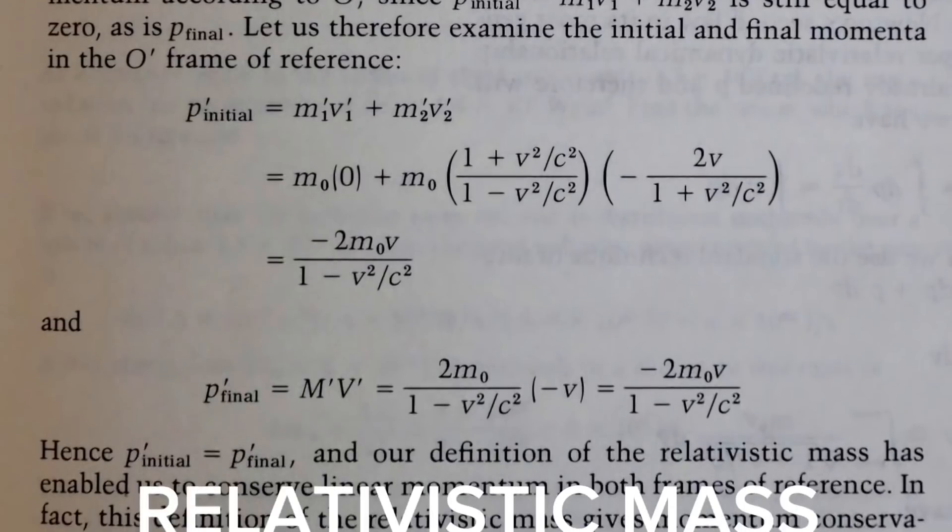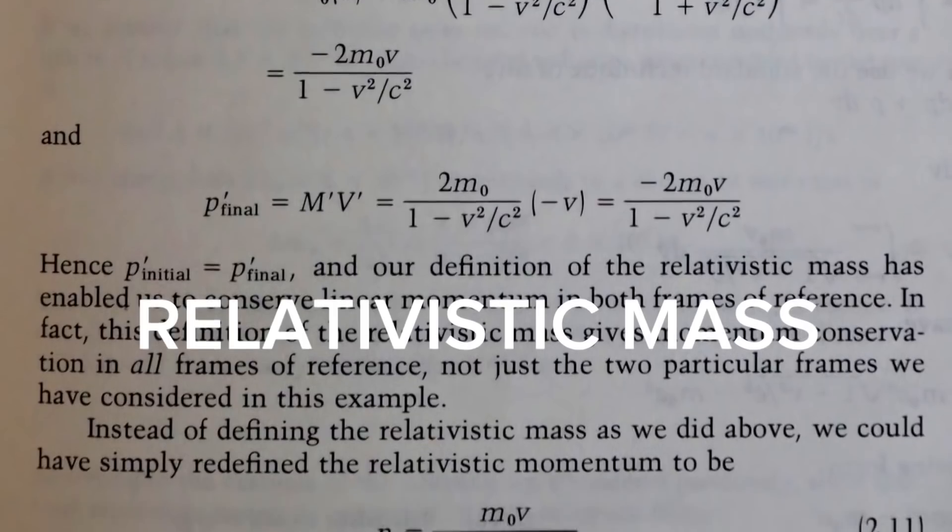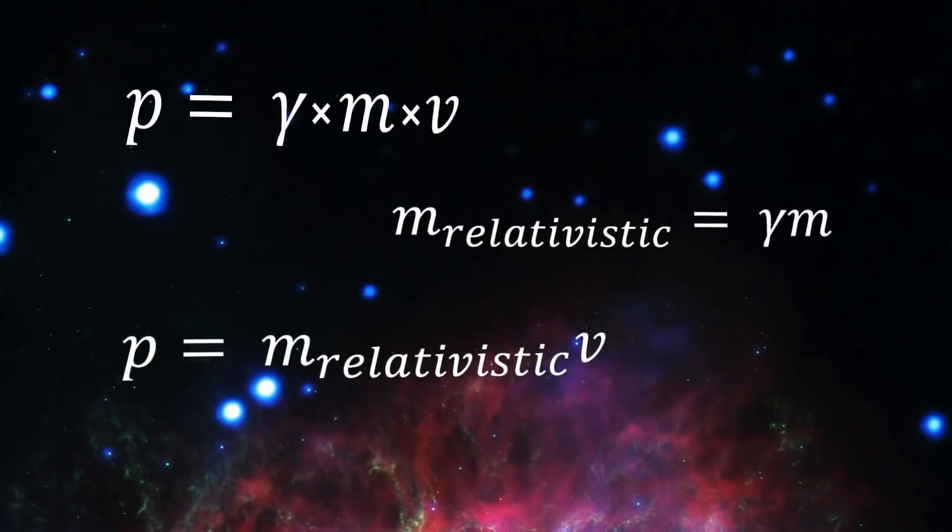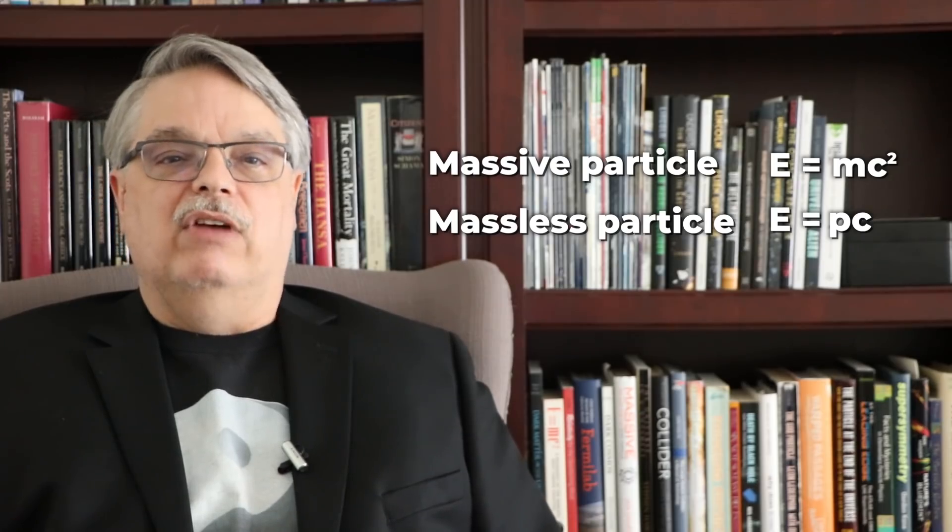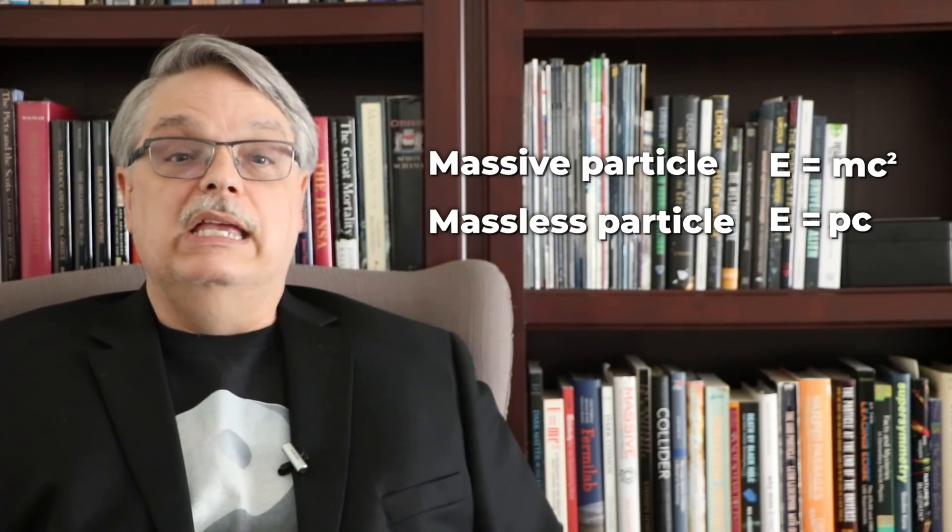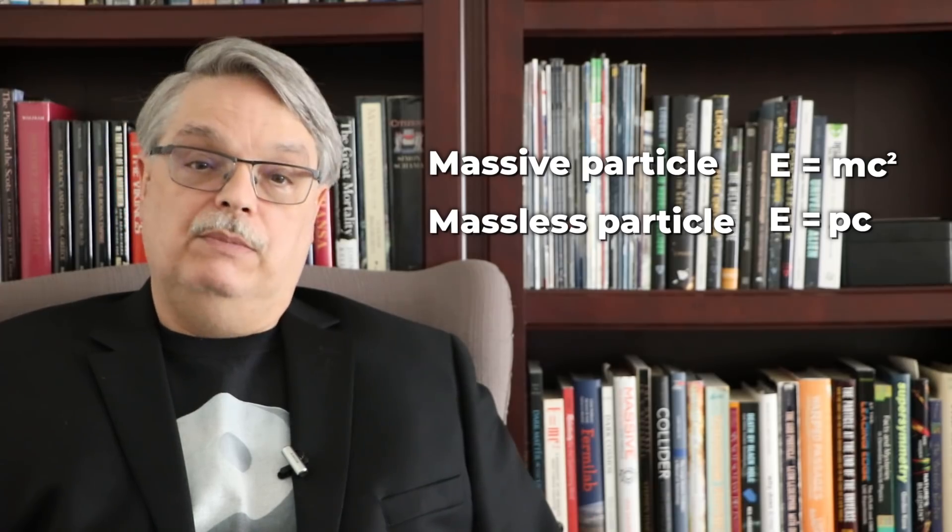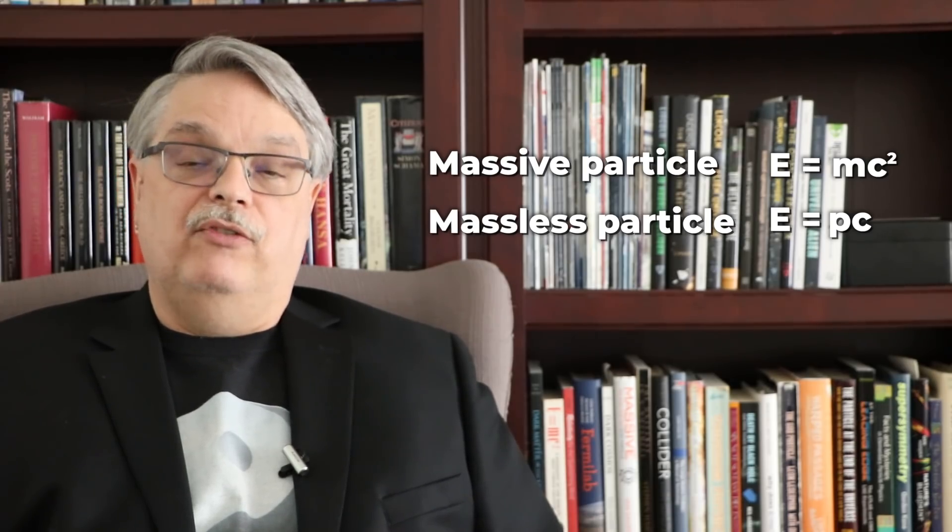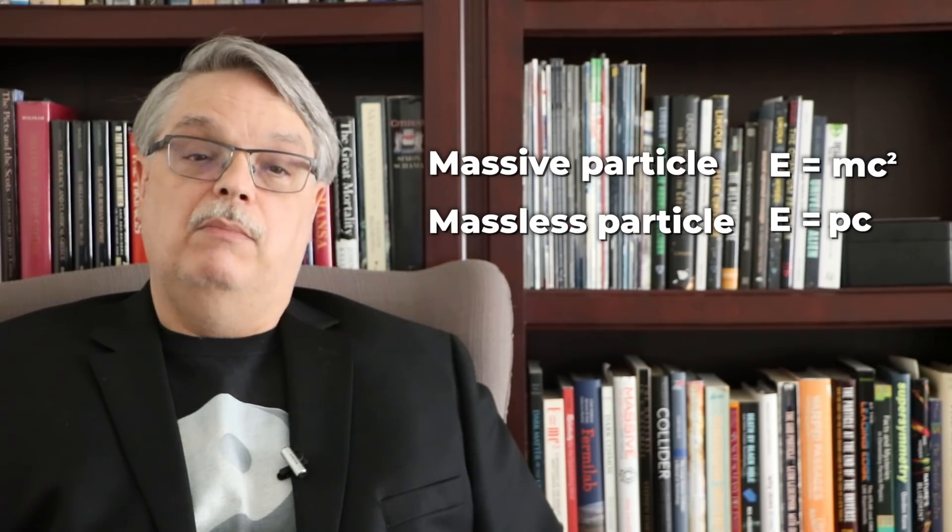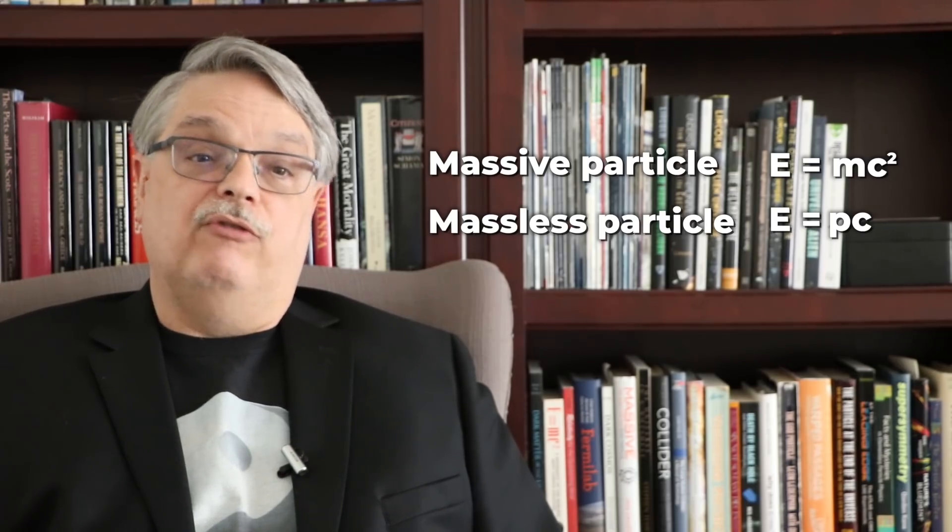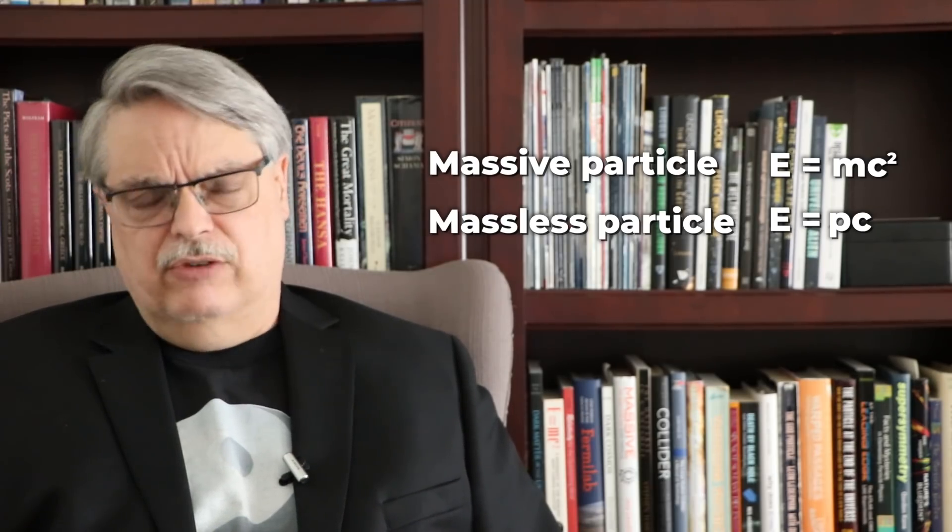If you want to understand what is really going on and why the claim that mass increases as velocity increases is both right in one sense and yet wrong if you dig deeper, I made a long form video on that subject. The URL of the video is in the description. In any event, the answer to Matt's question is that the equation E equals MC squared is a special case of the much more complicated equation and this simplification is true only for stationary massive particles. The simplification for massless particles tells a very different story.